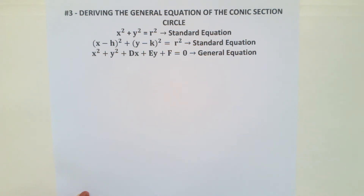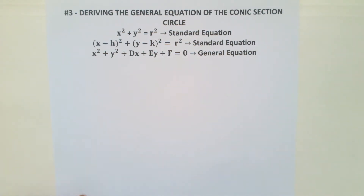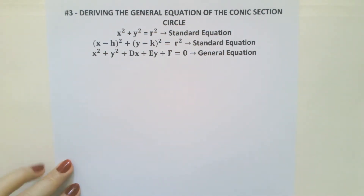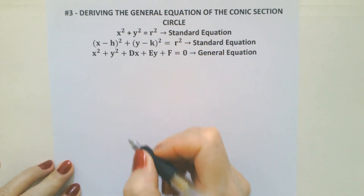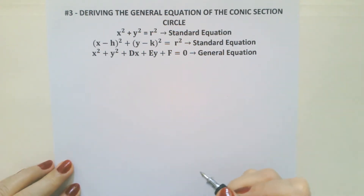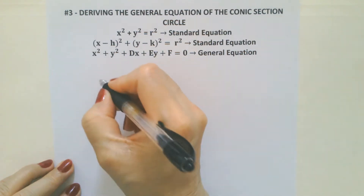The general equation is given as x squared plus y squared plus dx plus ey plus f is equal to 0. We are going to derive this general equation by using the standard equation.